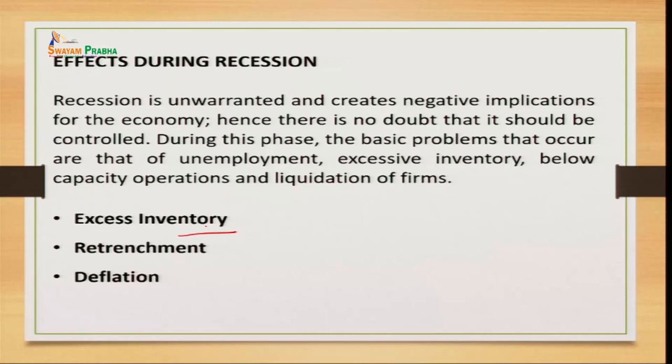The third recession effect is deflation — the opposite of inflation. Inflation is when the general price level goes up; deflation is when the general prices of commodities go down. The contraction or recession phase brings deflation because of lesser demand for goods and services. Producers reduce prices to stimulate demand. Some firms follow rigid pricing, while others follow flexible pricing policies, reducing prices of their commodities during contraction.